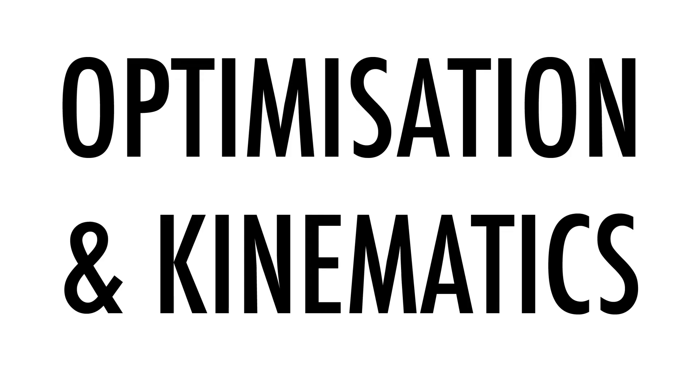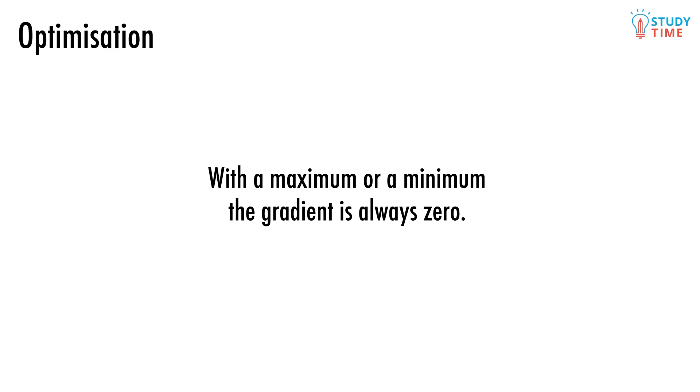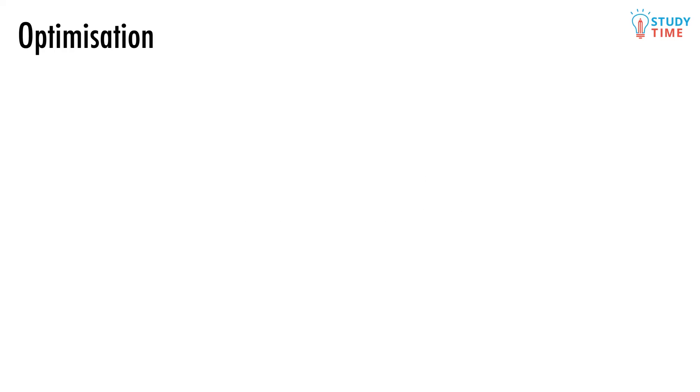By now you hopefully have a pretty good understanding for how maximum and minimum points on graphs work. The big idea with a maximum or minimum is that the gradient is always zero. We can use the idea of the gradient being zero to solve real-life problems that ask us to find the maximum or minimum of something. These problems are called optimization problems and they're actually really easy to solve.